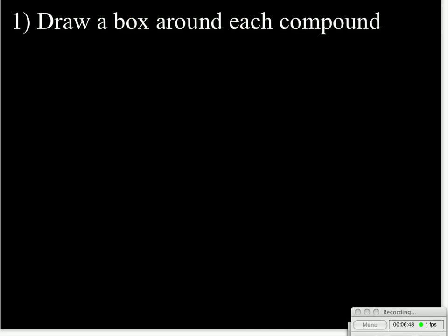So the process for balancing an equation is the first step is we are going to draw a box around each compound. Now this first step really is optional, and it may be something that I find that my students do better if they start out with this. Later on, as soon as you feel comfortable, you can stop drawing the box around each compound.